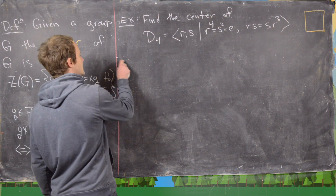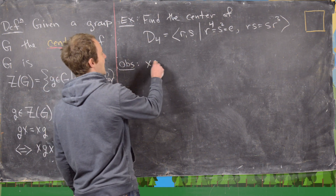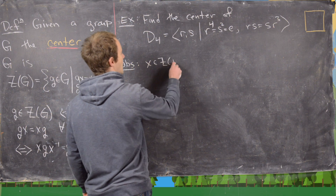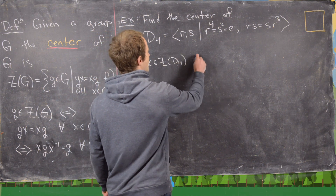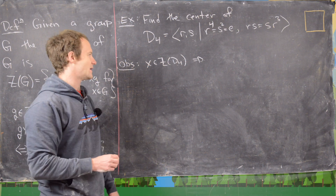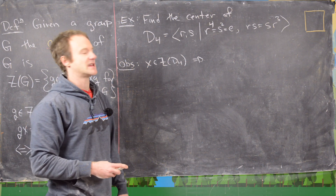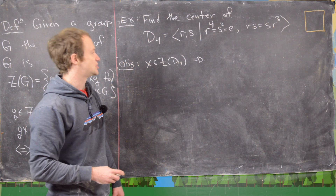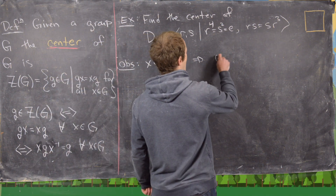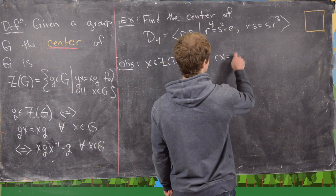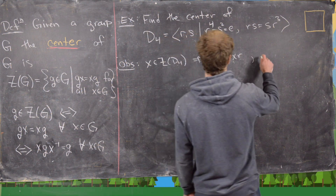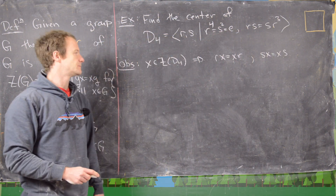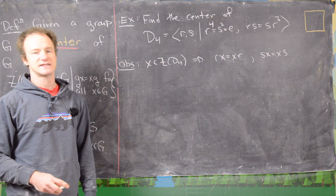If x is in the center of D4, it commutes with every element of D4. But it's enough to show that it commutes with just the generators of D4. In other words, RX must equal XR and SX must equal XS. We're going to look at two cases.